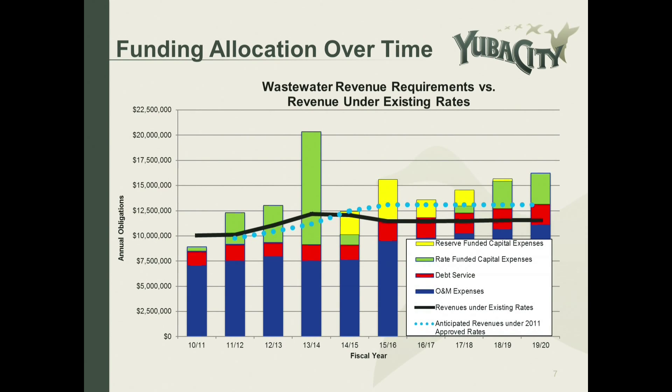When we look at wastewater revenues, this graph is very similar — blue is O&M expenses, red is debt service, green and yellow are projects. The black represents revenue under existing rates, and the dashed blue line represents anticipated revenues under the 2011 approved rates. The reason that the wastewater fund hasn't had the same decline as the water fund is because residential customers are charged a flat rate for wastewater. So you're really seeing a drop due mainly to commercial customers, because they pay based upon their actual water usage.